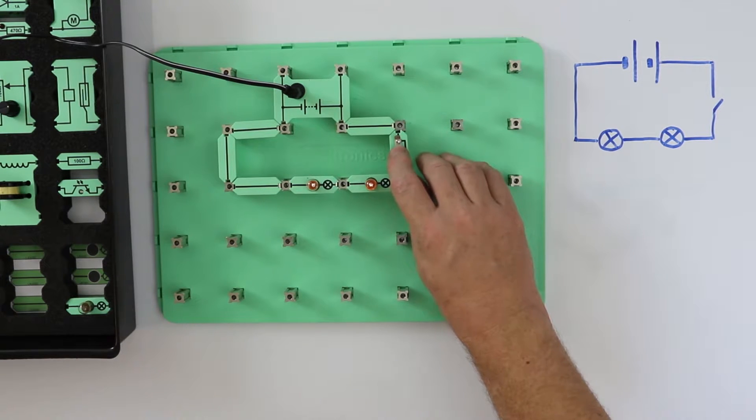Now let's see what happens when the switch is pressed. The circuit is complete. The electricity flows around from one side of the battery to another.